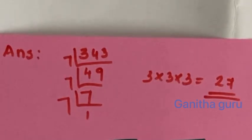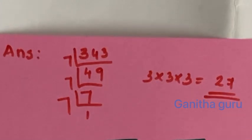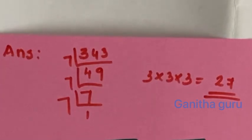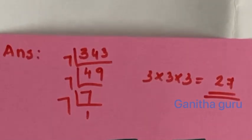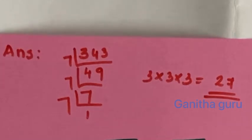If we factorize, we need to find what makes a perfect cube. Now if you answer, you have 3 or 3 or 3 — you have a cube. You have to pick up 3 or 3 or 3. The answer is 27, because 27 is 3 into 3 into 3.